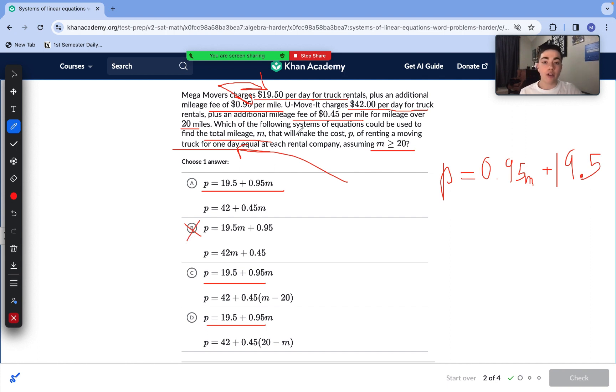Now onto our You-Move-It equation. We have P once again. Our y-intercept is the same format, so it's going to be 42. And then our slope here, we need to take a look at this plus an additional mileage fee of 45 cents per mile over 20 miles. So we need to reach that 20-mile threshold to start charging that money. Of course, that rules out answer choice A because 20 has to be involved somehow. We have two ways these equations are either doing it, M minus 20 or 20 minus M.